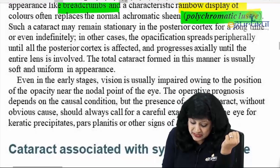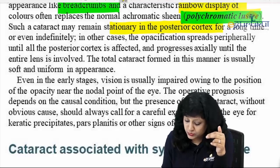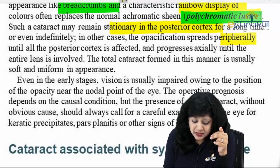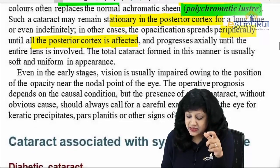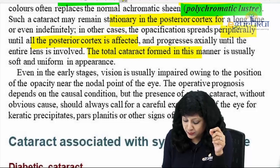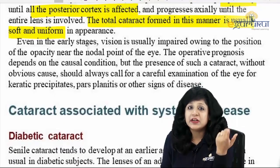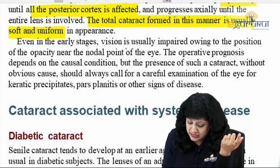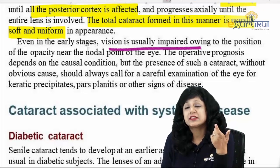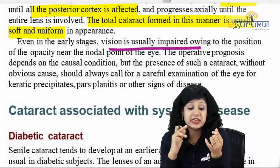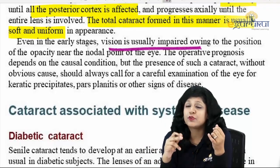Such a cataract may remain stationary in the posterior cortex for a long time. In other cases it can spread peripherally until all the posterior cortex is affected, progressing axially. The total cataract formed in this manner is usually soft and uniform. Even in the early stages, vision is impaired because the cataract is found morphologically at the posterior cortex or posterior subcapsular — near the nodal point — so vision is affected.